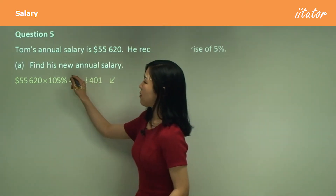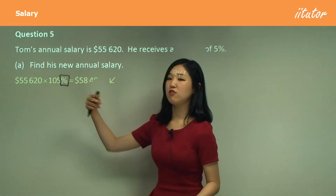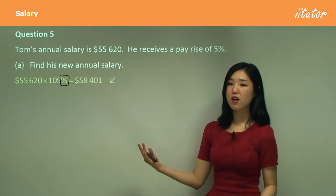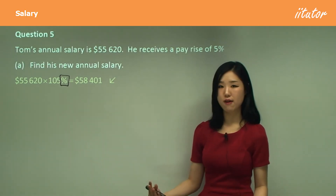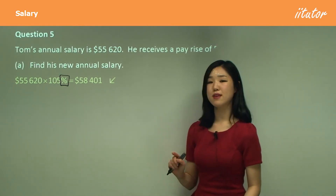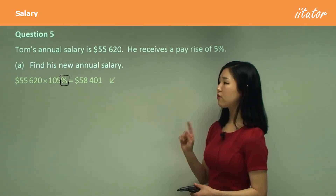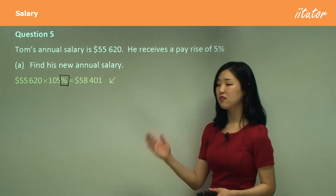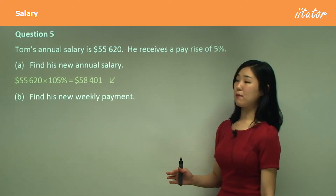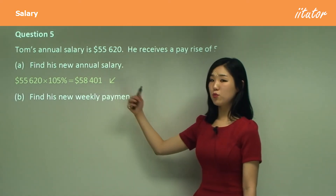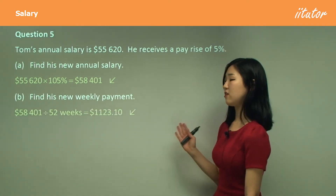Now, this percentage button — for those who don't already use this — there is a percentage button in your calculator. A lot of people tend to change this into a decimal or make it into a fraction. That's fine too, but I see a lot of students making silly mistakes when they're converting a percentage to a decimal or a fraction. So instead, simply use the percentage button in your calculator. So go look for that and try to utilise that button, and then you won't have to make any silly mistakes at all. Find his new weekly payment — if his new annual salary is this, simply divide it by 52. And that's the new weekly payment.